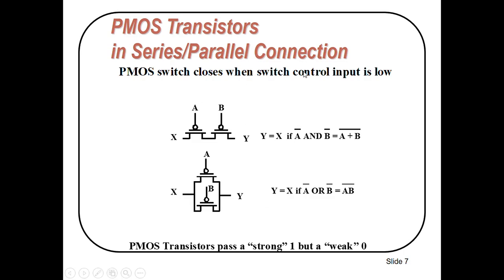P-MOS transistors in series or parallel connections: P-MOS transistors turn ON when we apply low gate voltage. To implement the function A'·B', A and B will come in series with P-MOS transistors, and we put this combination in the pull-up network. Similarly, to implement A' OR B' — which equals (AB)' by De Morgan's theorem — A and B will come in parallel. P-MOS transistors pass a strong 1 but weak 0.